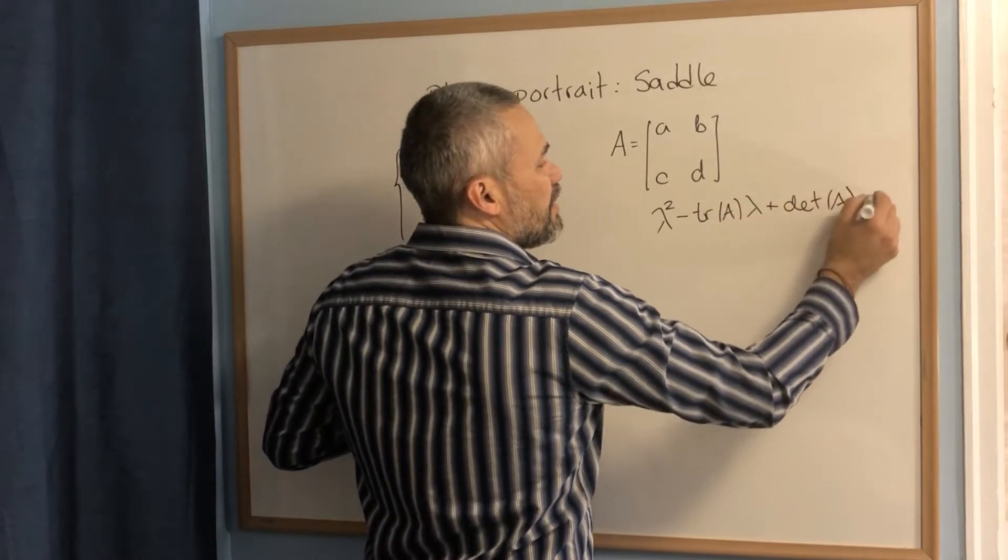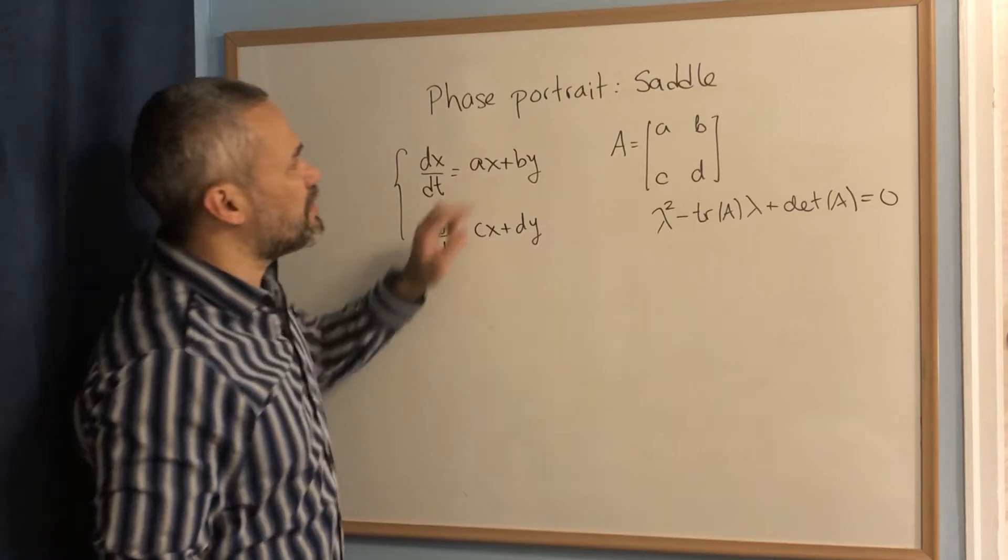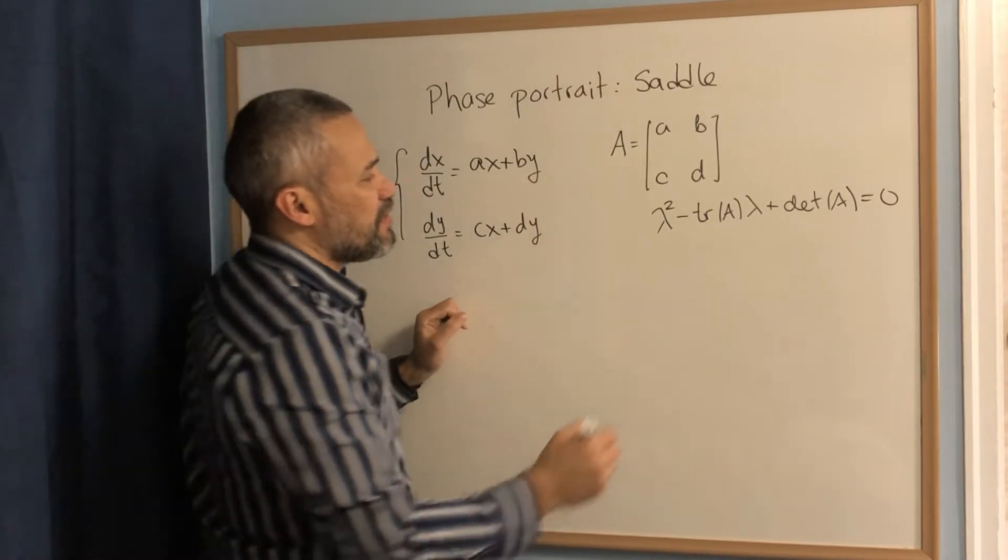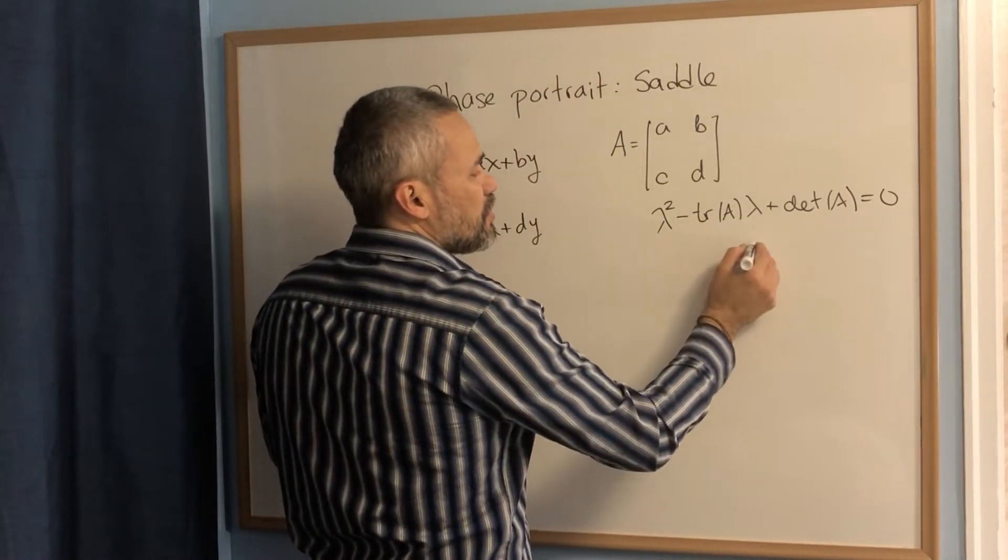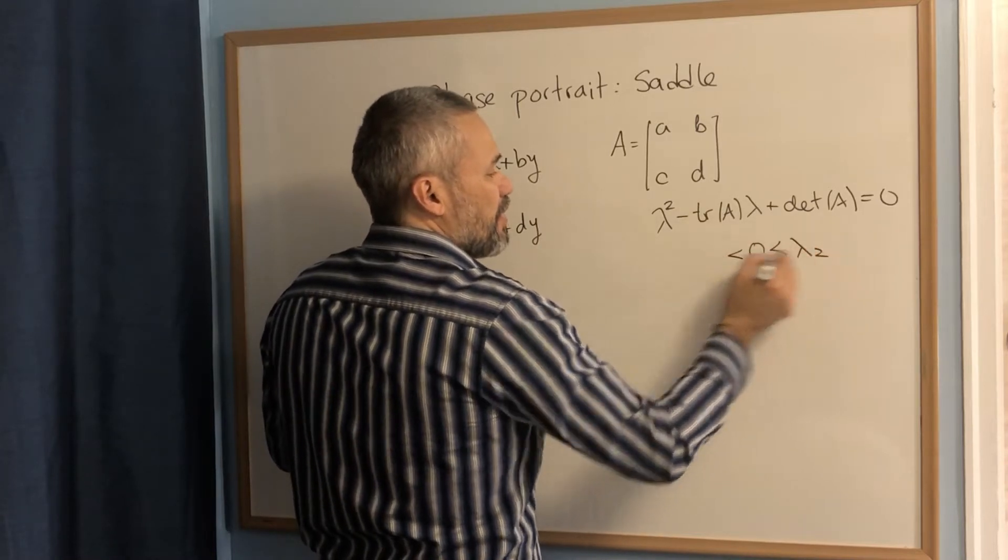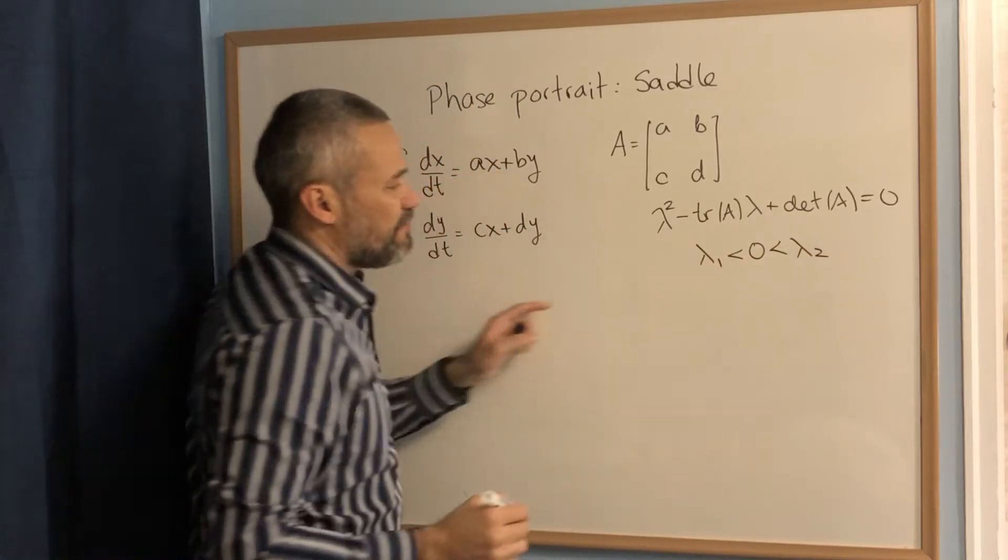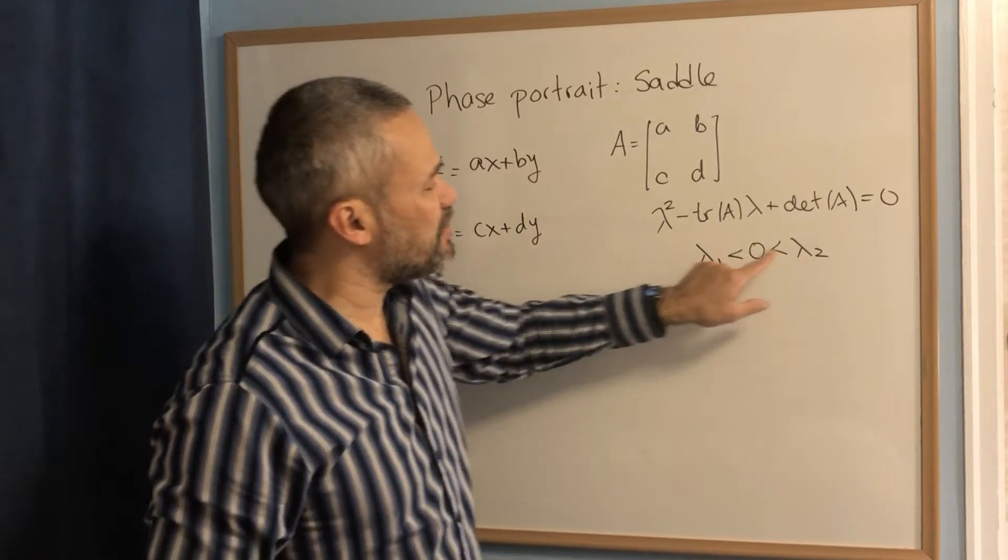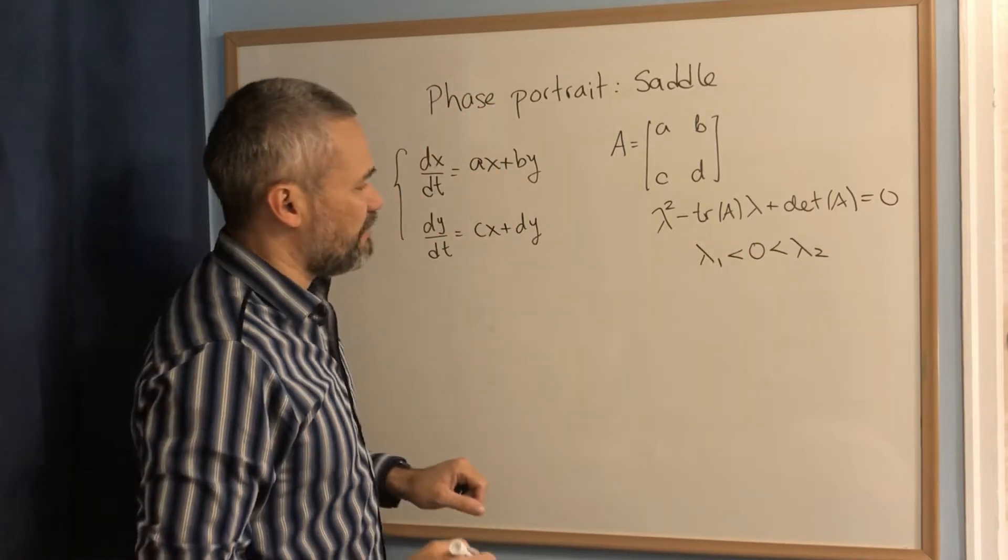And if we have a saddle, it's because the solution of this equation is like this, one is positive and the other one is negative. The eigenvalues, we have one negative eigenvalue and a positive eigenvalue.